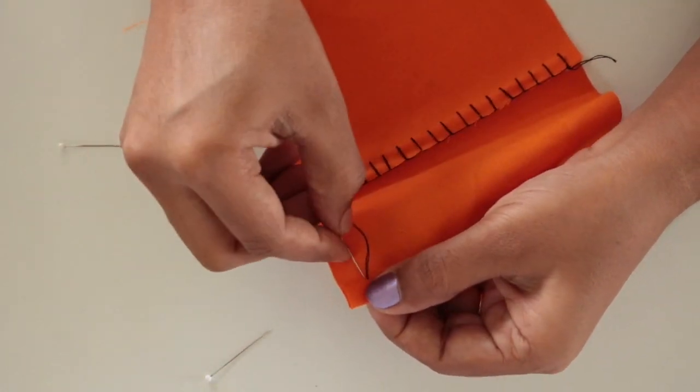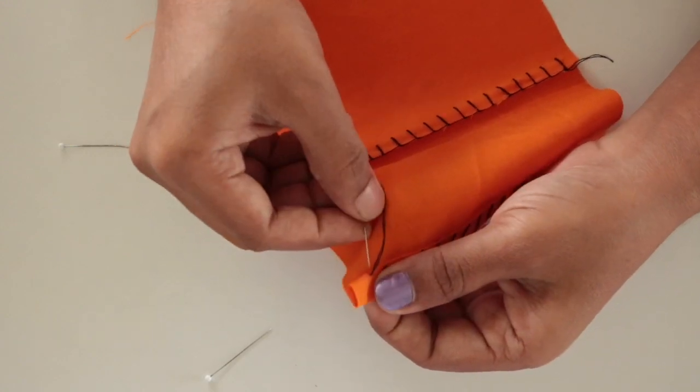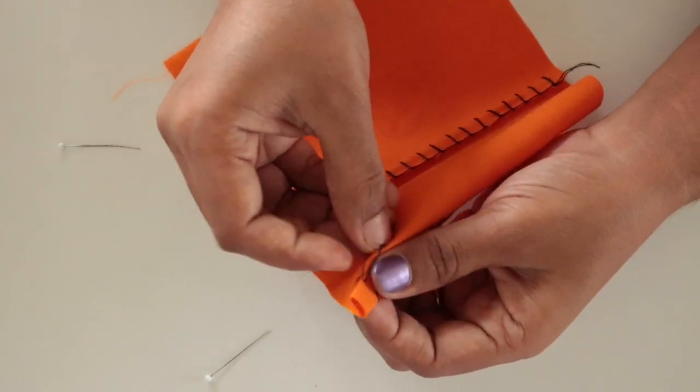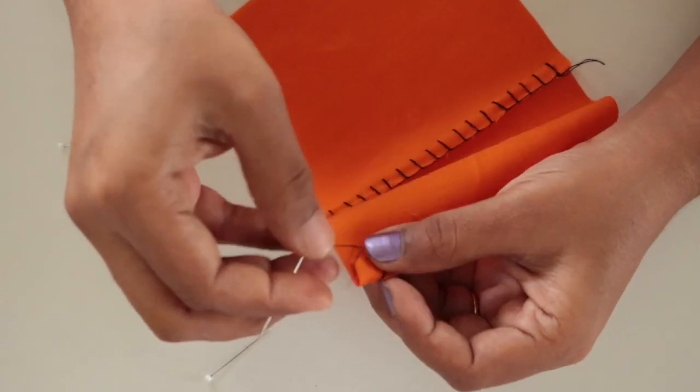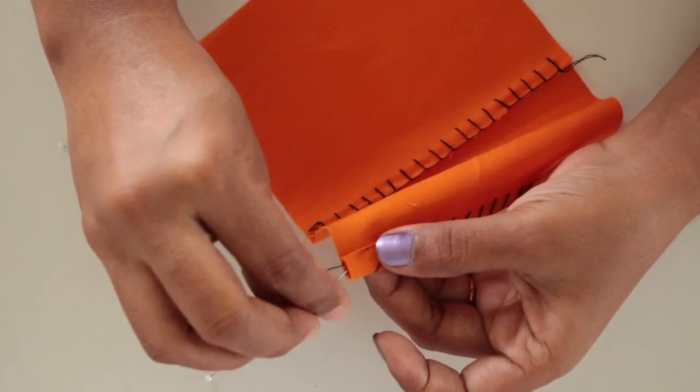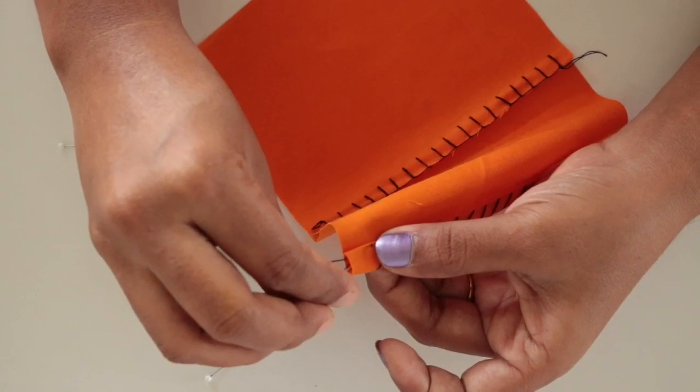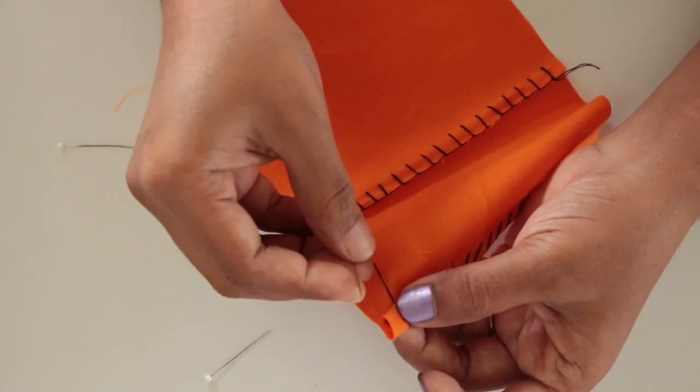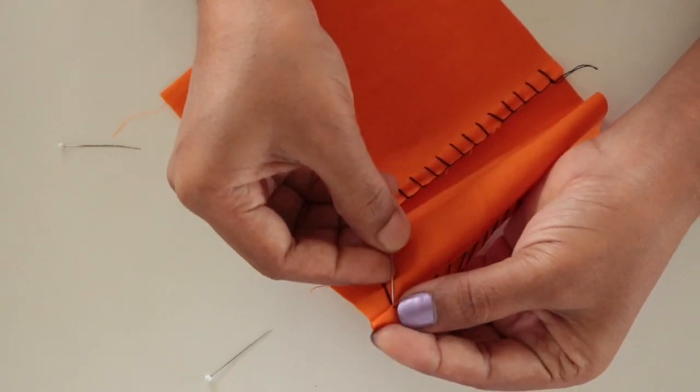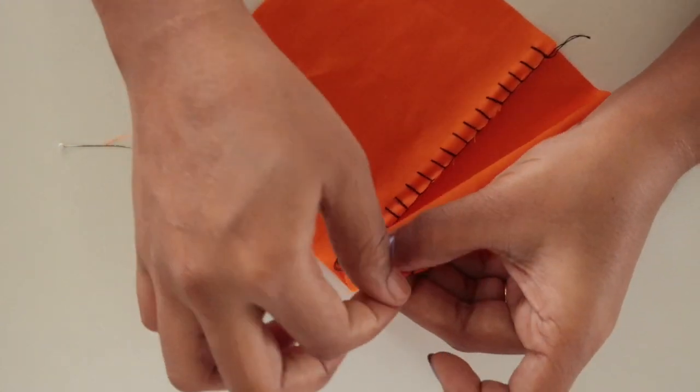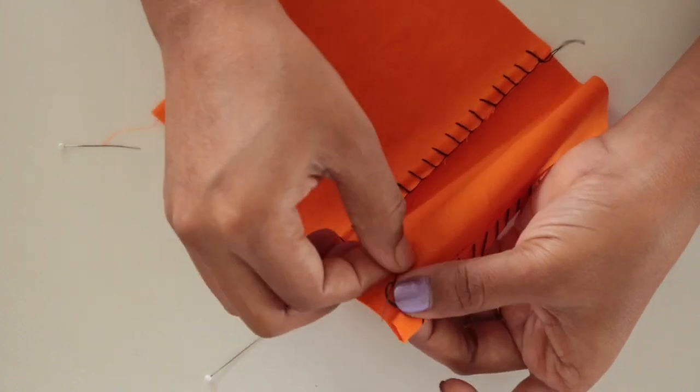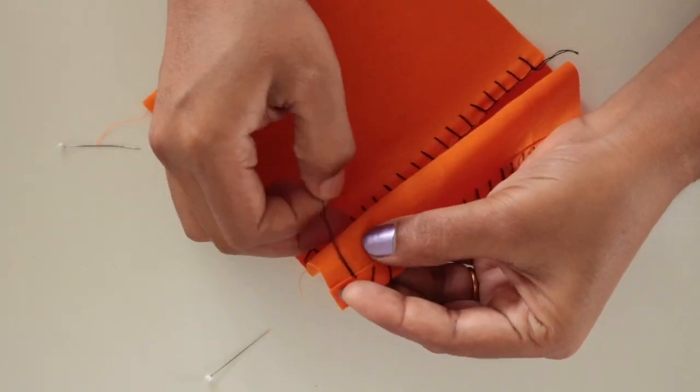Now at the end tie a knot, go back and tie two to three knots like this. And cut the excess thread.